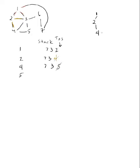I pop 5 off the stack — 5 is the child of 4. The current stack is 7 and 3. I've now visited 1, 2, 4, and 5. Five's children are 4 and 3, both already hit, so nothing new is added. I pop 3 off — 3 was a child of 1. I push 3's children: only 6 is new. I pop 6, and 6's only new child is 7, but 7 is already on the stack. I pop 7, and the stack is now empty — done.